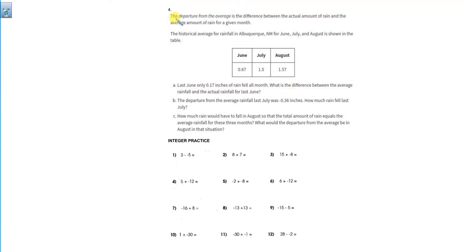All right, number four, last page of the homework. The departure from the average is the difference between the actual amount of rain and the average amount of rain for a given month.